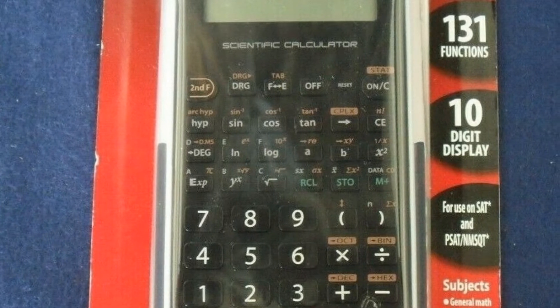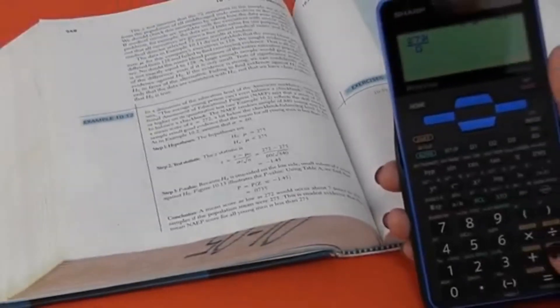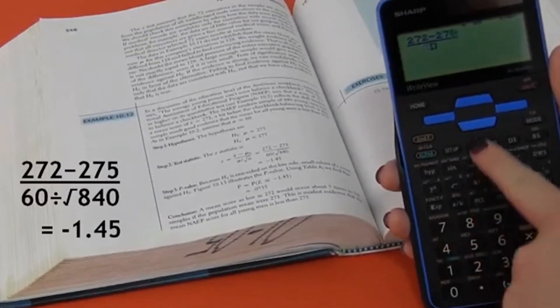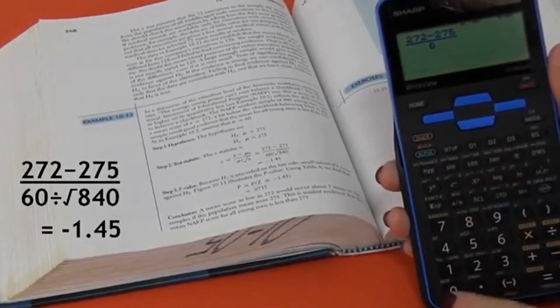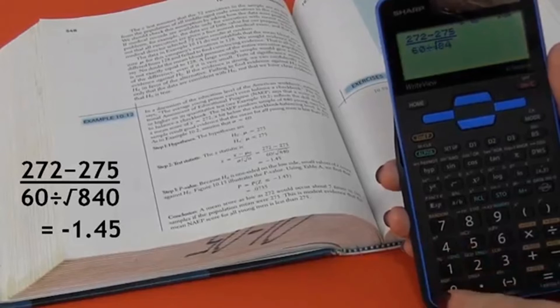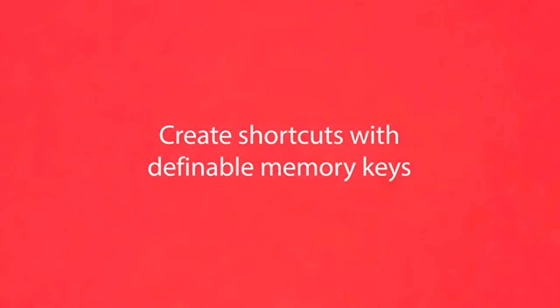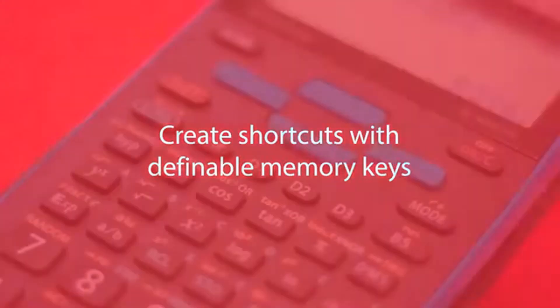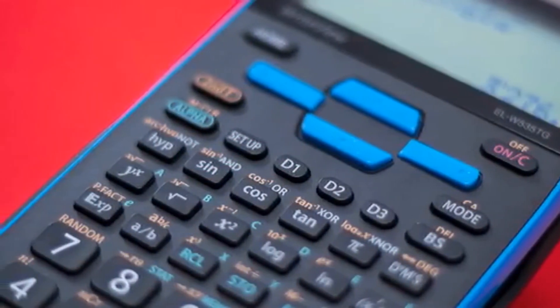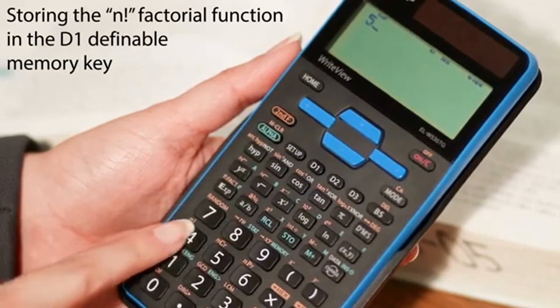Number two: Sharp Calculators ELW535TGBBL Scientific Calculator. Performs 422 advanced scientific math and statistic functions to help students studying general math and science, pre-algebra, algebra, geometry, trigonometry, statistics, biology, and chemistry. 16-digit four-line LCD with WriteView makes scientific equations easier to solve because calculations can be entered and viewed exactly as they would be written.